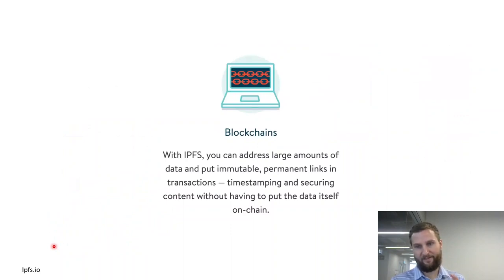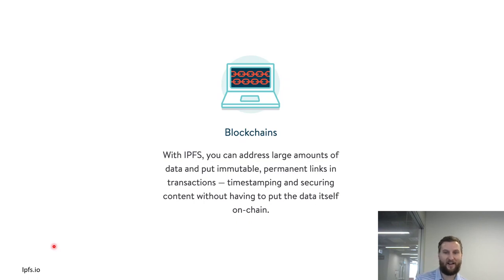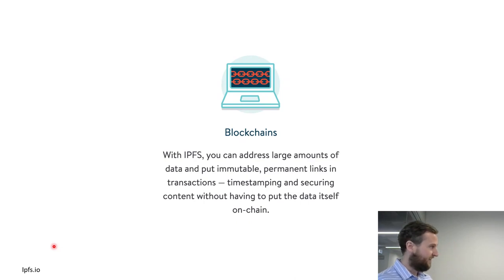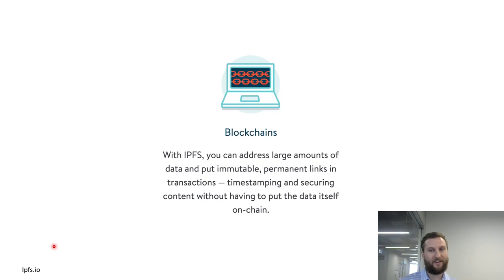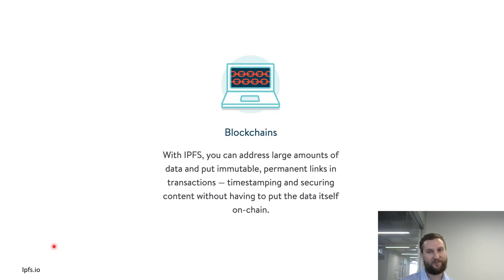From the IPFS page, there's overlap between using IPFS with blockchain: you can address large amounts of data and put immutable permanent links in transactions. The transactions on your blockchain are just hashes, but you can hash anything digital. Why not hash that large file you've created and put it on the blockchain? You can take your source code, hash it, put it on the blockchain, and you have a verifiable claim at that point in time to whatever that hash refers to.